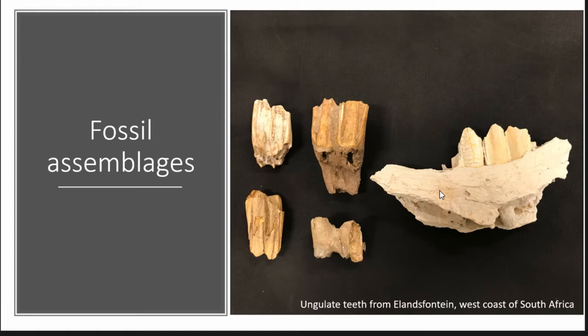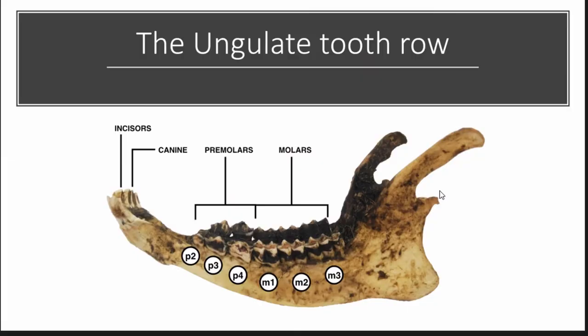We don't often find the whole mandible — we're often constrained by isolated teeth. So it becomes very important to know whether the isotopic composition along different teeth in the tooth row of an individual are consistent, so that different measurements are directly comparable. And if they're not consistent, are there systematic differences between the teeth so that we can apply a correction factor before making these comparisons?